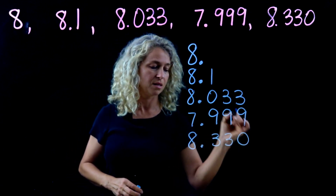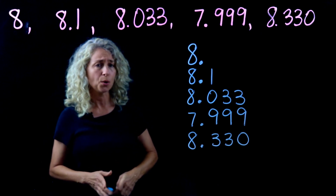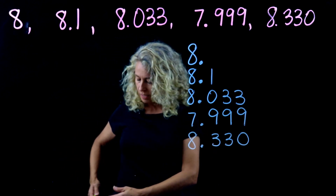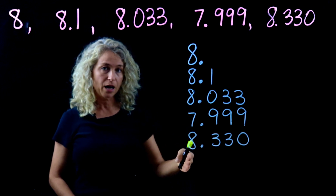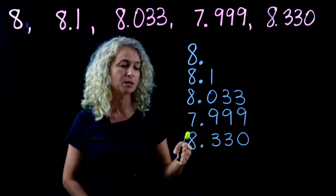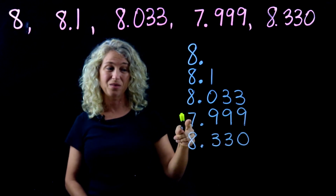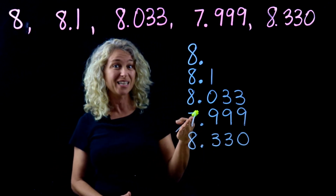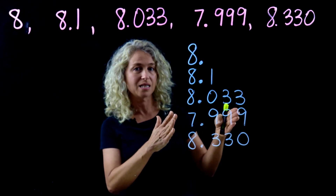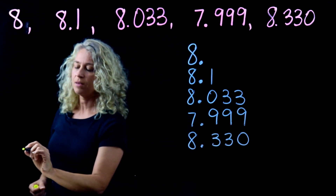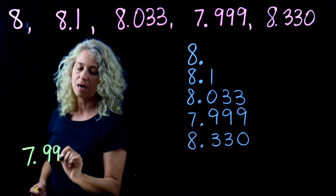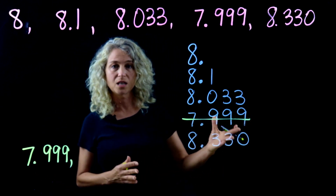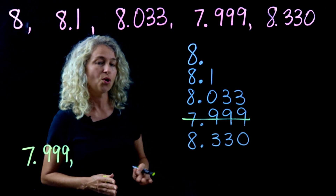We're looking for least to greatest, so let's look at the ones place first. We have eights and a seven — which is the least value? It's the seven. So we write seven and nine hundred ninety-nine thousandths as our least number, and cross it off knowing we're finished with that one.